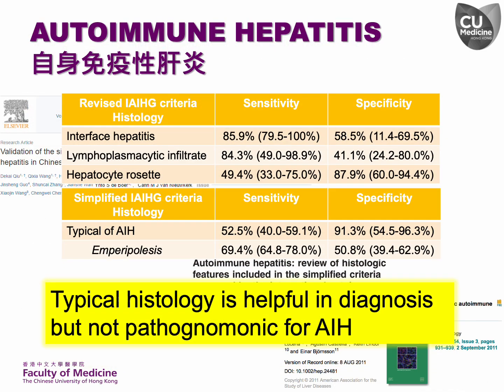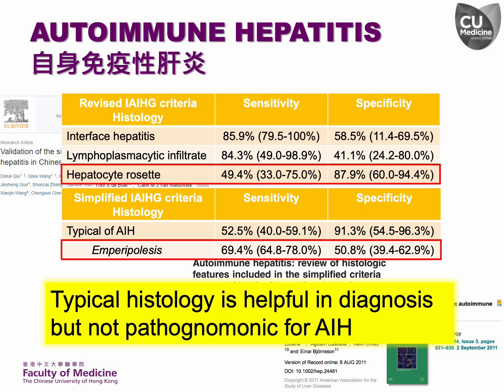The term 'typical of autoimmune hepatitis' in the simplified system refers to the presence of a portal lymphoplasmacytic infiltrate with interface hepatitis, hepatocyte rosettes, and emperipolesis. However, various studies have shown that these histological features are not highly sensitive or specific for diagnosing autoimmune hepatitis. Furthermore, hepatocyte rosette is not a sensitive indicator, while emperipolesis is neither sensitive nor specific for diagnosing autoimmune hepatitis.